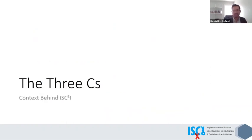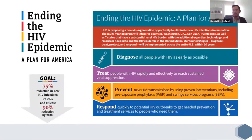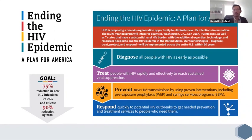So first, the three C's in ISCII. As we all know, in 2019 our current administration put forth the Ending the HIV Epidemic Initiative, also known as EHE, and it's been described as a once-in-a-generation opportunity to eliminate HIV infections in our nation. Now that we have the right tools and the right data to curb the tide of the HIV epidemic, owing to decades of research and scientific breakthroughs, EHE really focuses entirely on implementation of these evidence-based interventions in order to reduce HIV infections by 90% by 2030.